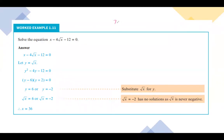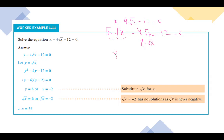Next example: solve x minus 4√x minus 12 equals to 0. First, rewrite x as √x times √x. So we have √x · √x minus 4√x minus 12 equals to 0. Now let y equal to √x. Substituting gives y² minus 4y minus 12 equals to 0.